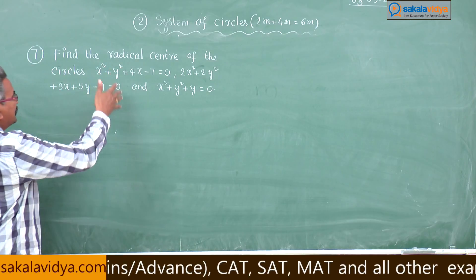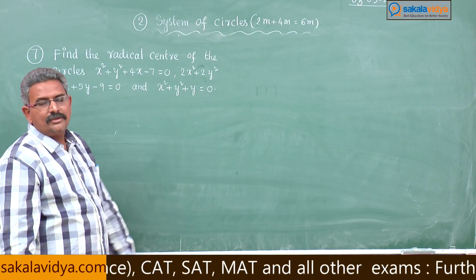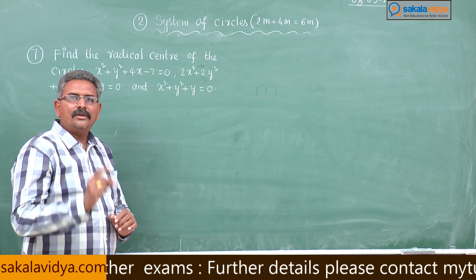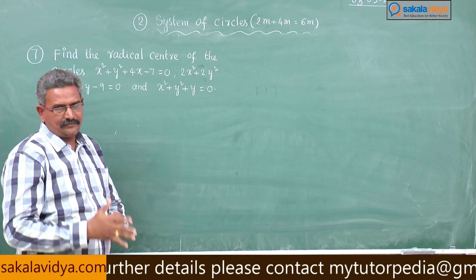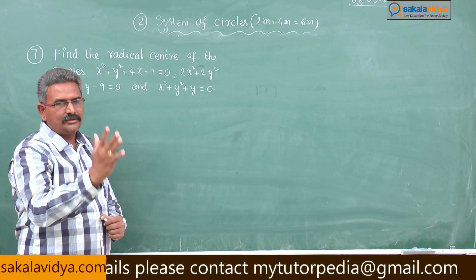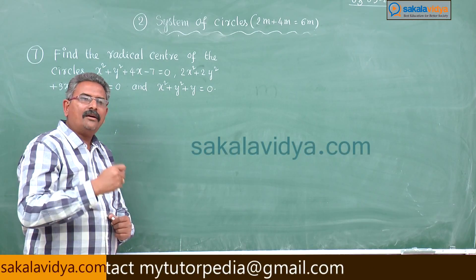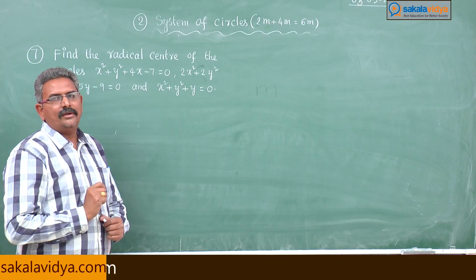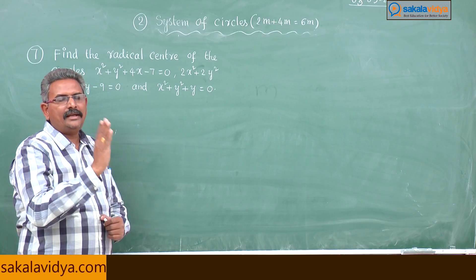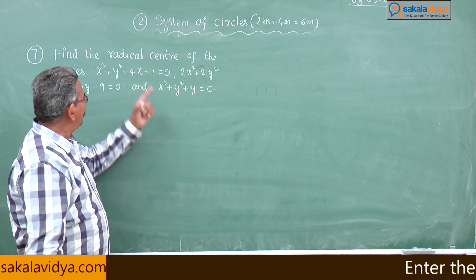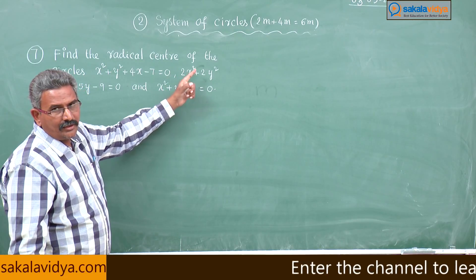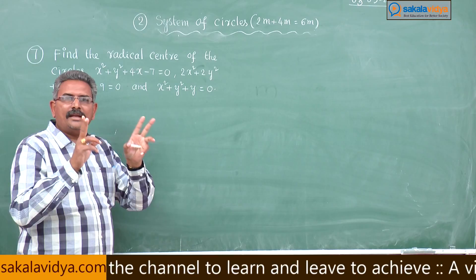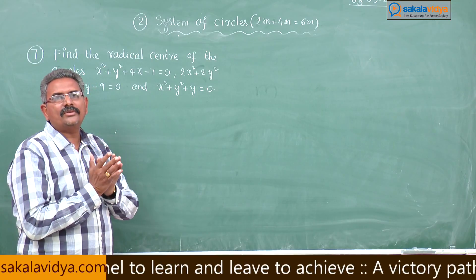Since here 3 circles are given, in order to find out the Radical Centre, first we have to find out 2 equations of Radical Axes. If you solve the 2 Radical Axes, we get the ordered pair (x, y), and that ordered pair is known as the Radical Centre. How to find out Radical Axes? S − S' = 0 and S' − S'' = 0 gives us 2 Radical Axes, then we have to solve them.